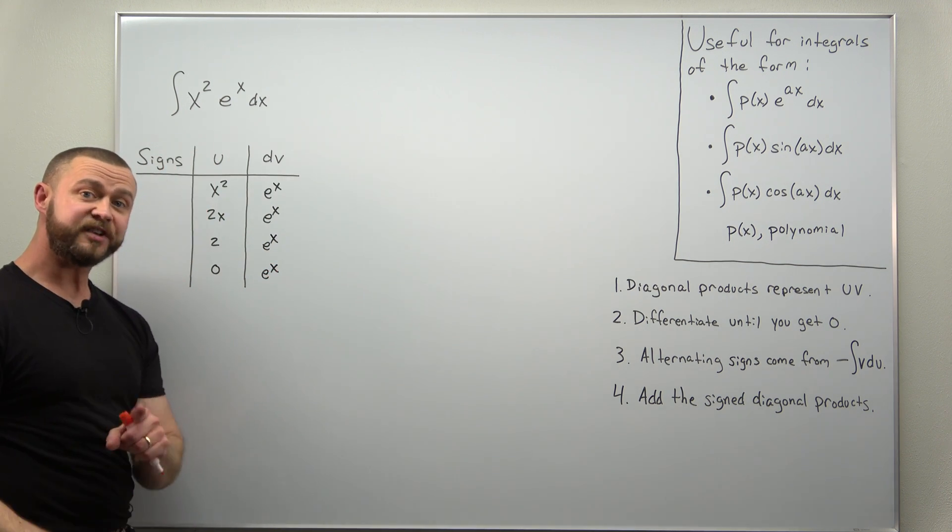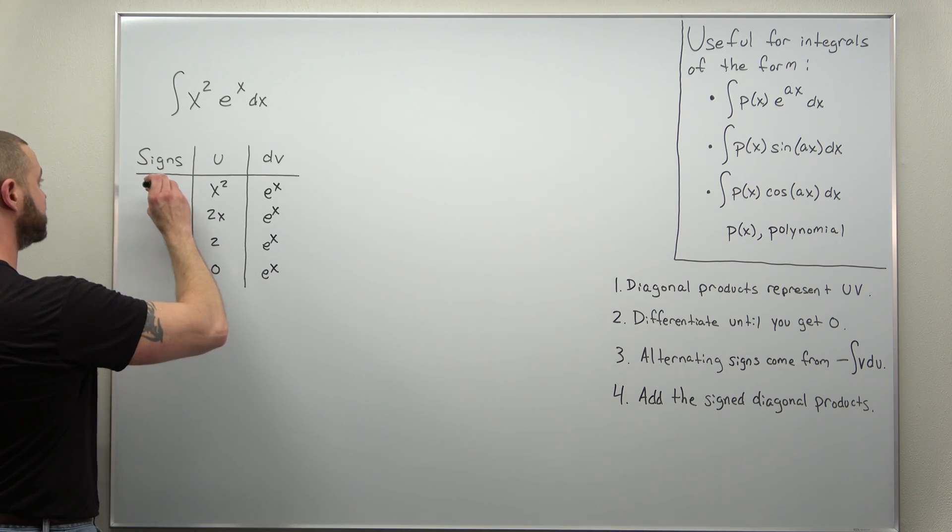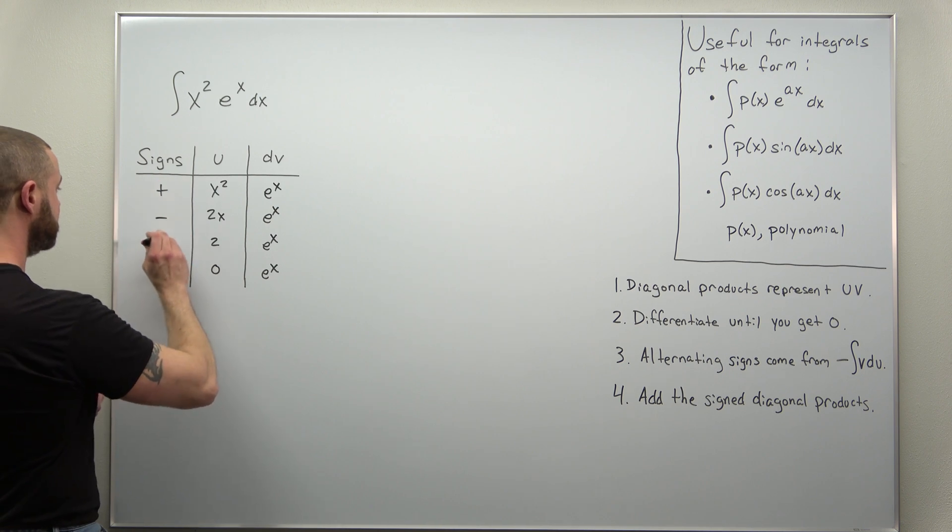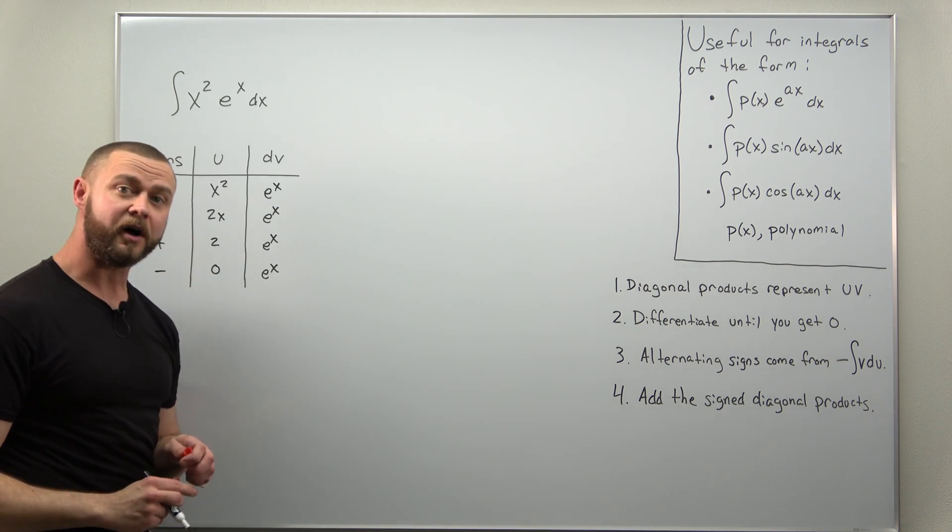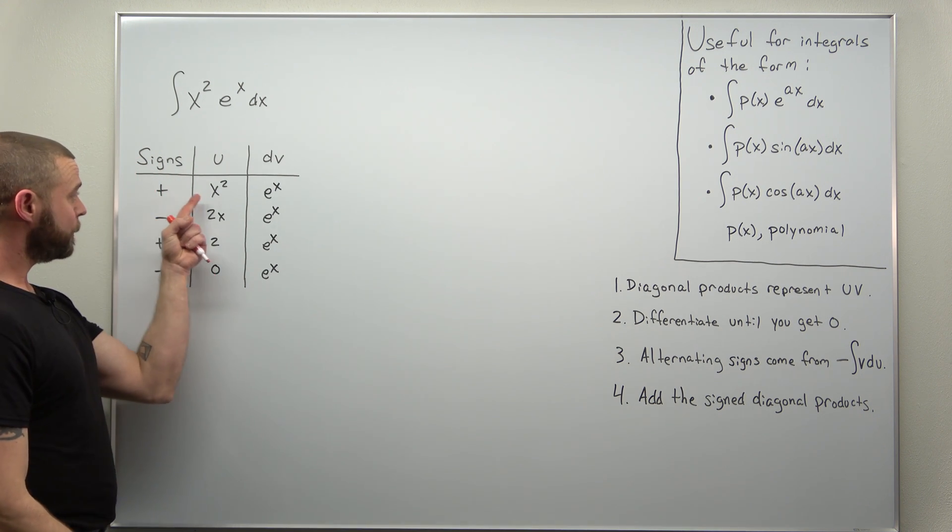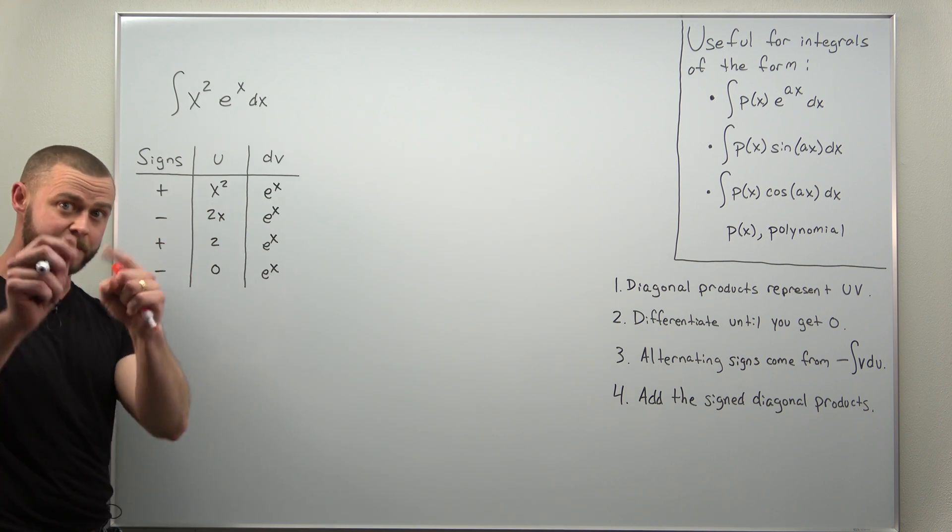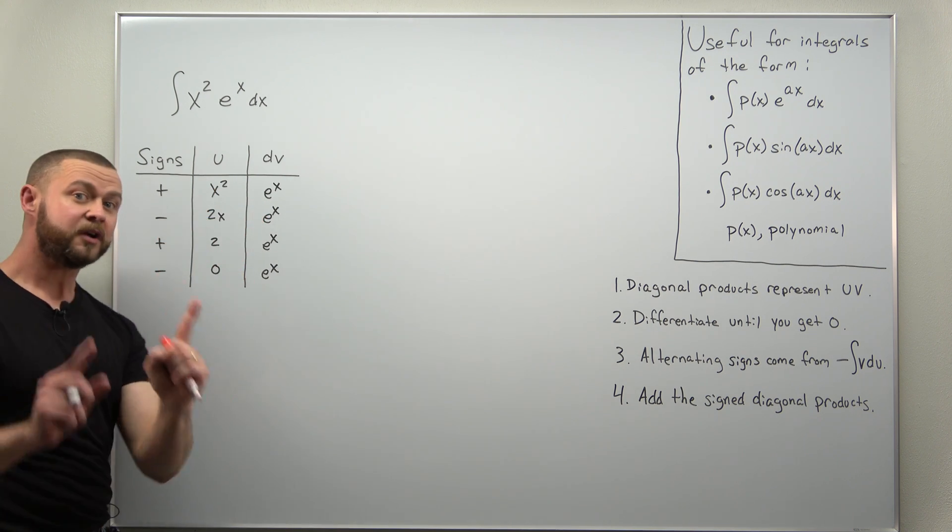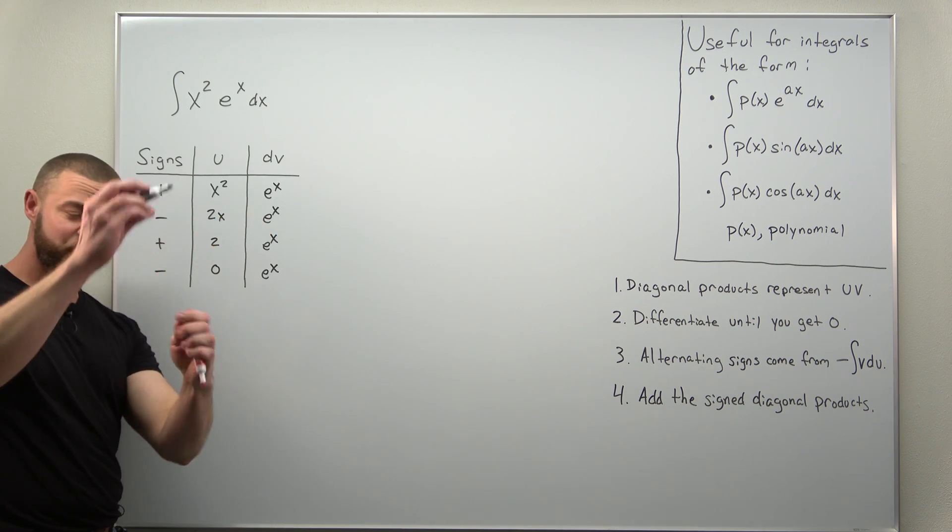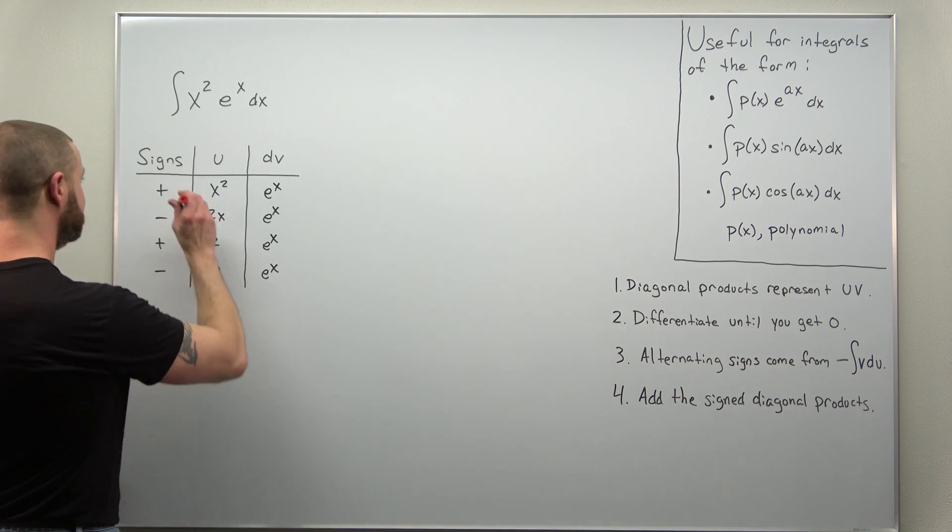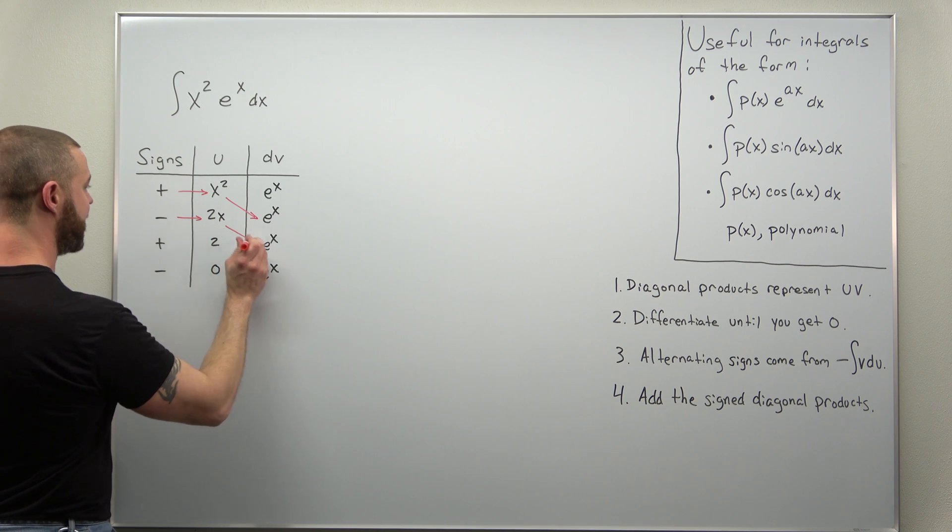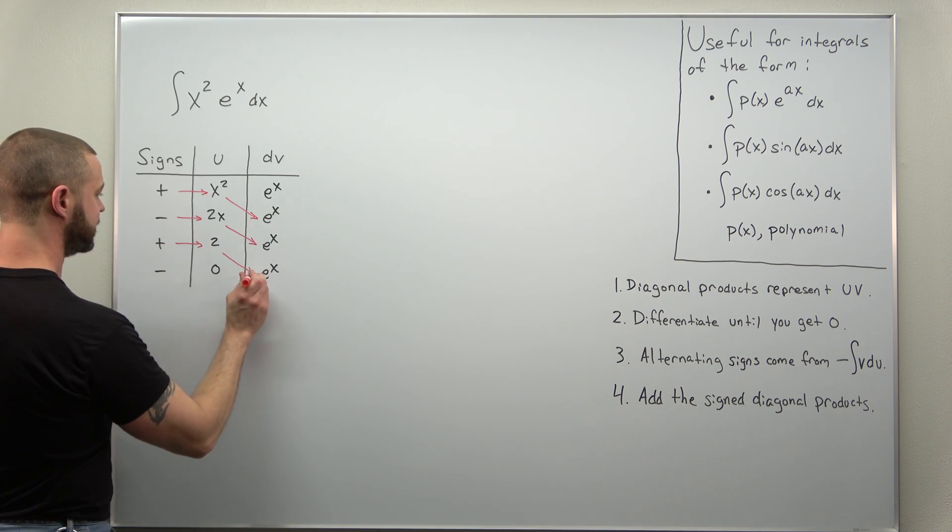The only thing we're missing are signs. Always start with a positive, a plus, and alternate from there. So plus, minus, plus, and minus, and we are done. We just need to extract our answer. We take the sign, multiply across, and then diagonally. Remember, your diagonal terms, those are your uv terms. I'm not quite as good as blackpenredpen, so I have to switch hands here. If we multiply across and diagonally, we can extract our answer.